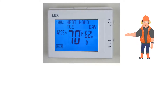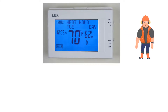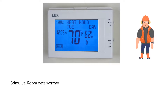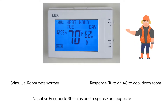A great example of feedback is a thermostat. Let's say we set the thermostat at 70 degrees. It's summer and hot outside and the room temperature begins to rise. Once it gets above 70 degrees, the thermostat senses it and turns on the air conditioner. The result is the room cools down to below 70 degrees. The stimulus is the room getting warmer. The response is to turn on the air conditioner to cool the room down. Can you see that the stimulus and response are opposite? This is an example of negative feedback.